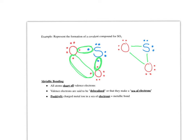The last type of intramolecular force we're going to talk about is metallic bonding. Metallic bonding is obviously for metals only. What we know is that all atoms share all valence electrons. Let's use sodium as an example. Sodium has one valence electron because it's in group one.